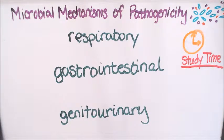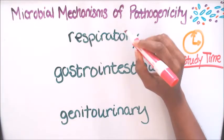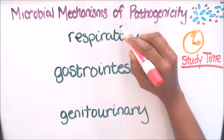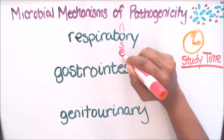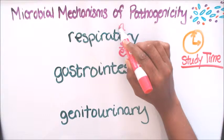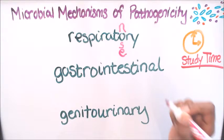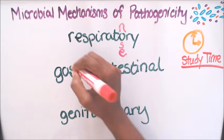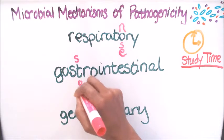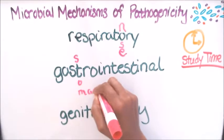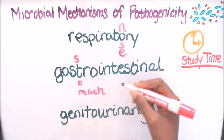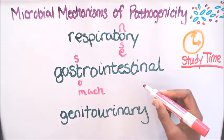Welcome to the study time portion of the video. We have our portals of entry and we're going to study them. For respiratory, we are going to use the O and spell nose, or you can spell mouth — that will help you remember that the nose and mouth are the portals of entry for the respiratory tract. For gastrointestinal, we're going to use the T and spell stomach. The stomach and the small intestines are involved in the gastrointestinal tract.